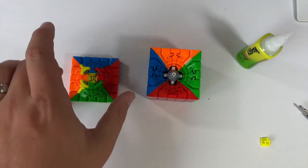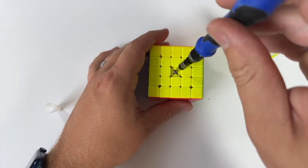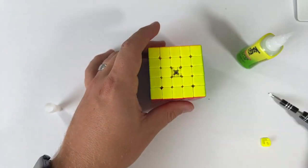Let the glue cure for a few minutes. Reassemble and enjoy your new core magnetized 5x5.